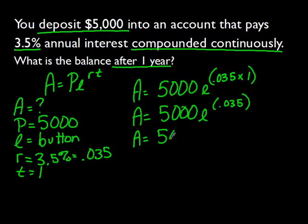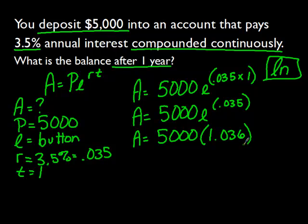We have A equals 5,000. We find the button E on your calculator. If you ever need help with that, feel free to contact me. It's usually located near the button for your LN that we used in the last problem. We type in E. We raise that to the .035 power. We get an answer of 1.036. Our last step to get our final answer, 5,000 times 1.036. Do that multiplication. We get $5,180.